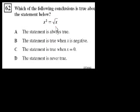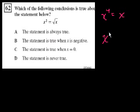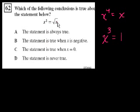x squared equals the square root of x. It definitely works for the number 1, and it works for the number 0. If you square both sides of that equation, you get x to the fourth equals x. And if you assume x does not equal 0, you could divide both sides by x, and you get x to the third equals 1. The only number that works for that is 1. But is the statement always true? No — if I put 2 there, is 2 squared equal to the square root of 2? No, 4 does not equal the square root of 2. So the statement is not always true.